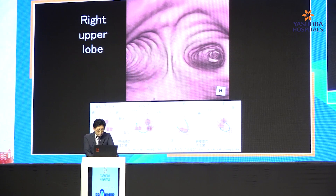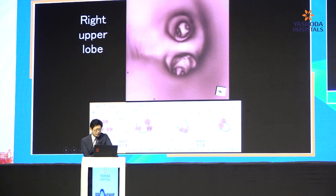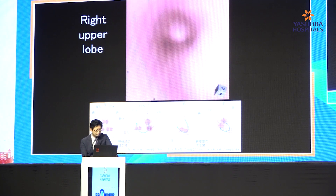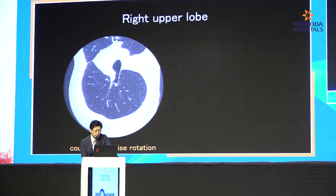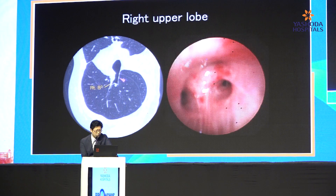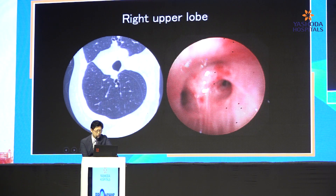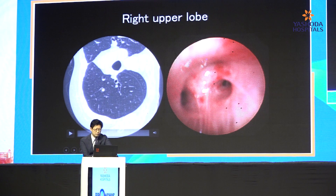And next, the right upper lobe. It is a very normal pattern — three branches — and in this patient, the target region is in the right B1. But in the right upper lobe, you should rotate counterclockwise to identify. This is the orifice of the right upper lobe, and B3 you can see. In this MIP image, this is B1, B2, B3.